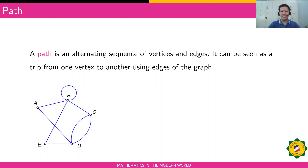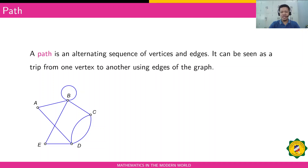Hello, welcome to the second part of our lesson on basic terms. Let's continue discussing some other terms in graph theory. A path is an alternating sequence of vertices and edges. It can be seen as a trip from one vertex to another using edges of the graph.